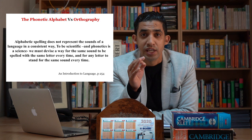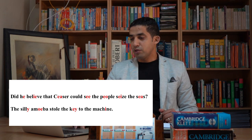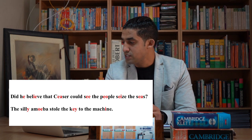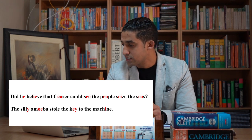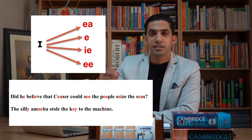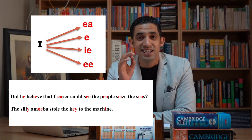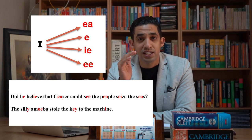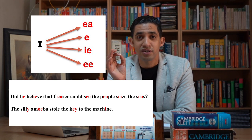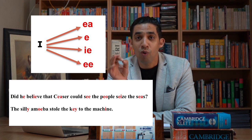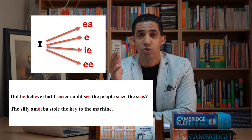Orthography is very weak — consider the sentence: 'Did he believe that Caesar could see the people seize the seas, the silly amoeba stole the key to the machine?' We can notice that one sound — the long 'ee' — is represented differently in spelling: sometimes as just the letter 'e,' 'i,' or 'y,' and sometimes as combinations like 'ea,' double 'e,' 'ie,' or others.